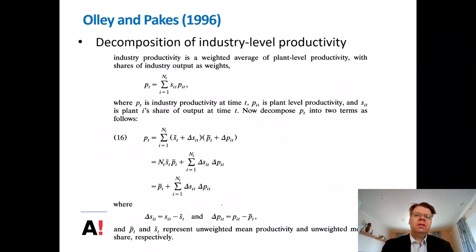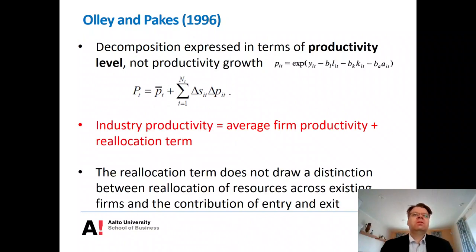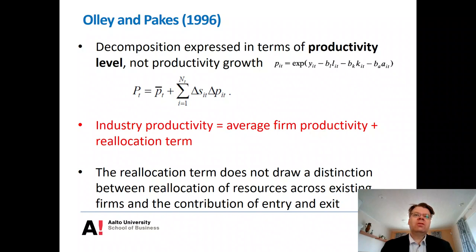This second component can be interpreted as a reallocation effect, and it relates to the covariance of the shares and the level of productivity. Intuitively, the industry productivity can be broken down as a sum of two components: the average firm-level productivity and a reallocation term. This reallocation term captures whether resources are allocated efficiently to the most productive firms. We can also monitor how this reallocation term develops over time, though the decomposition is stated in terms of the level of productivity.